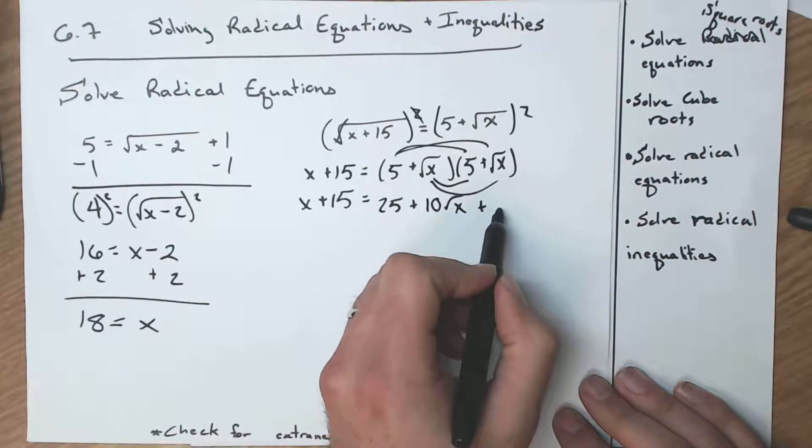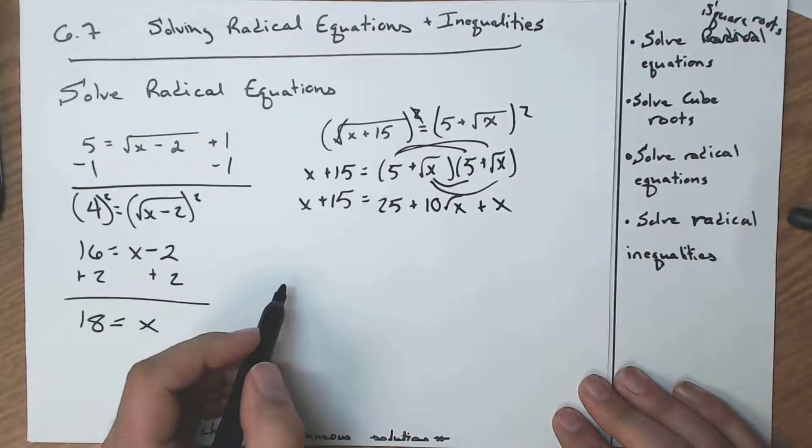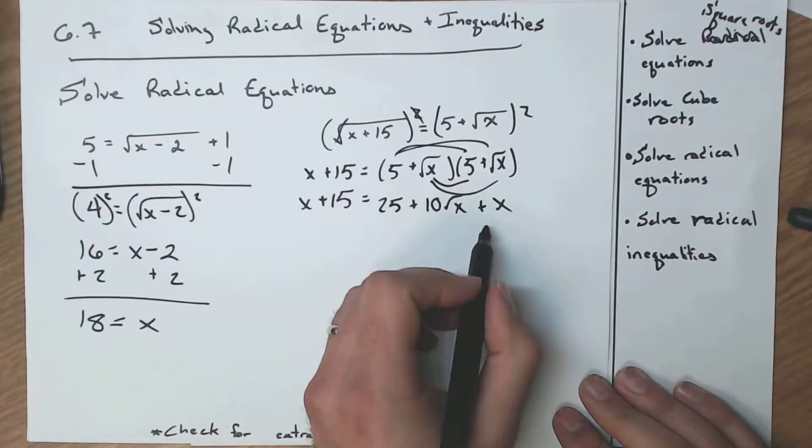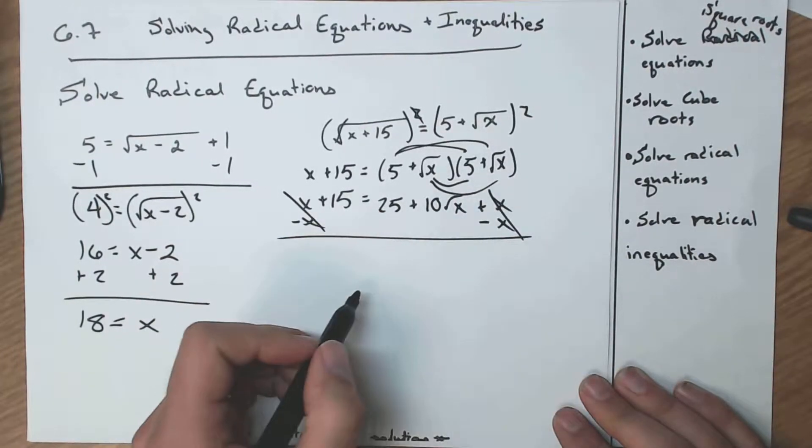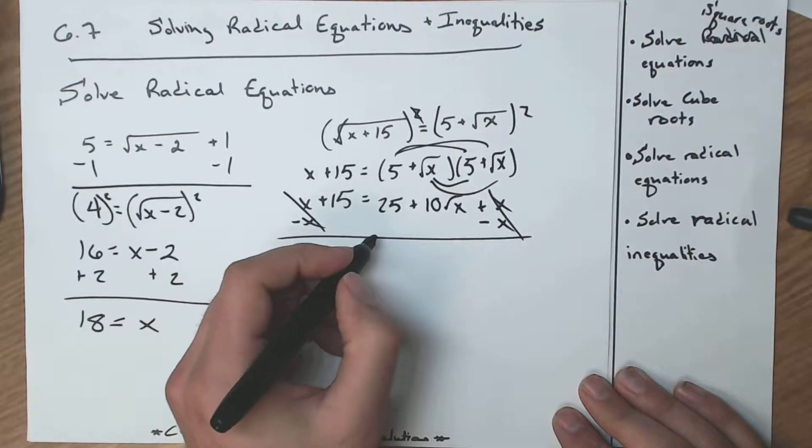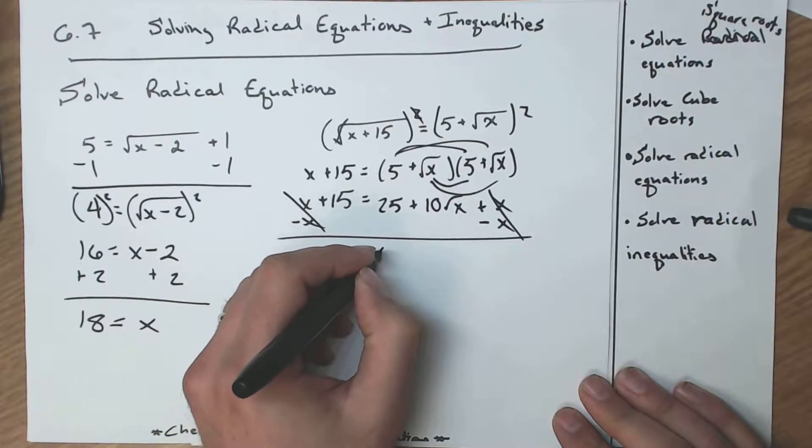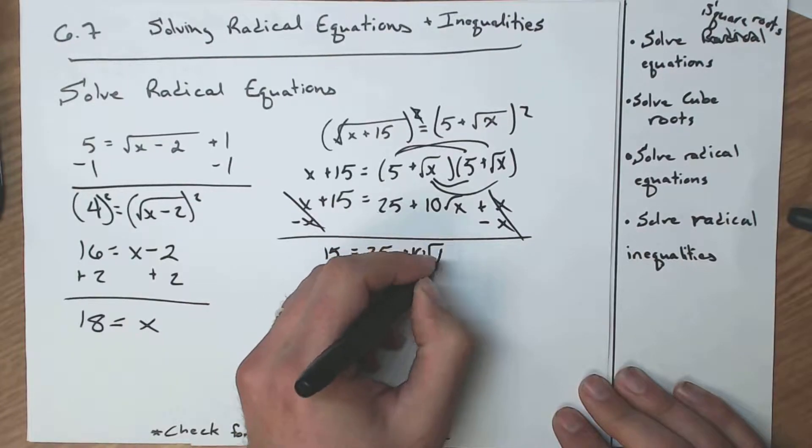I have an x on my left and an x on my right. I'm going to subtract 1, and you will see that they cancel on both sides. That's pretty awesome. So now I have 15 equals 25 plus 10 square root of x.